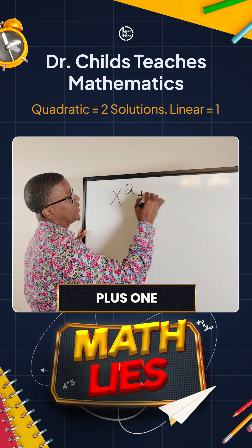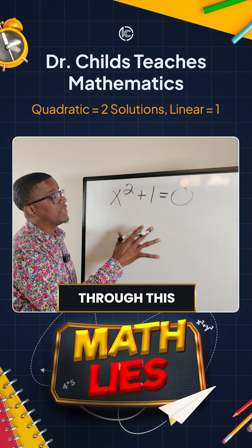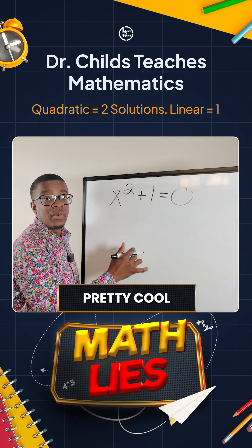Here's our example. x squared plus 1 equals 0. I agree. When I go through this, I'm going to get no real solutions. Pretty cool.